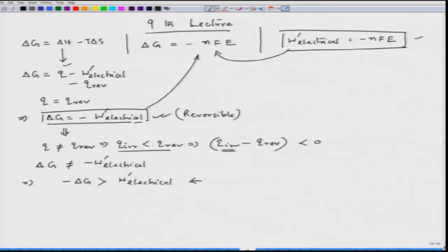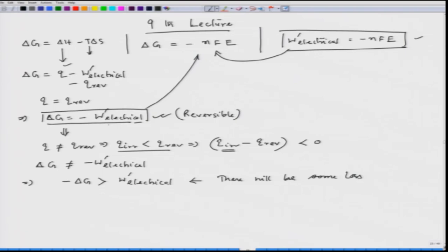What this means is that the amount of free energy available for doing work will not produce the same amount of work as in the reversible case — there will be some loss. The entire free energy change will not be available for doing electrical work. So this is the maximum work possible if the system goes reversibly.